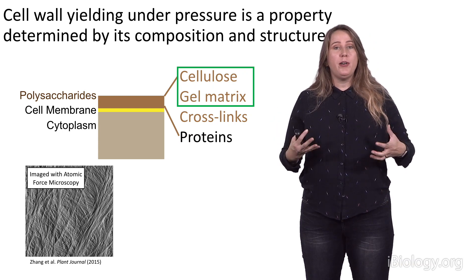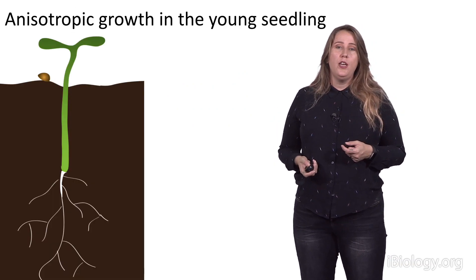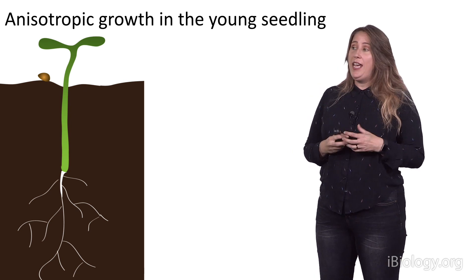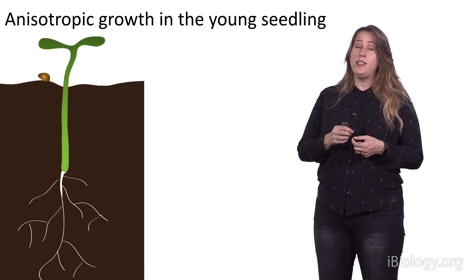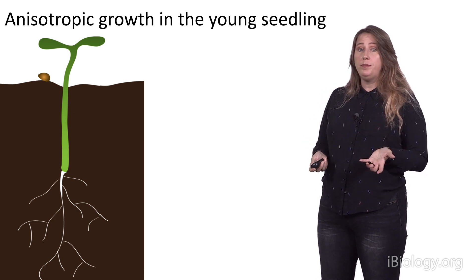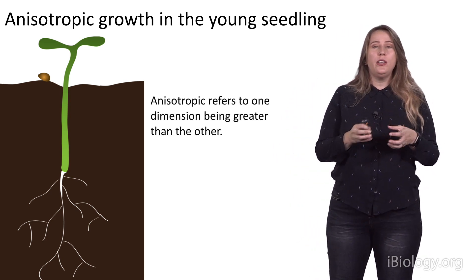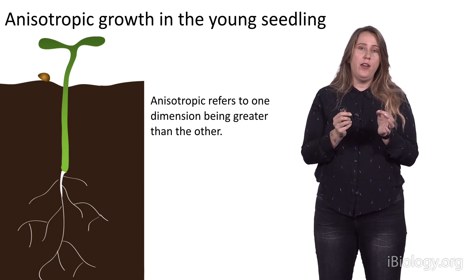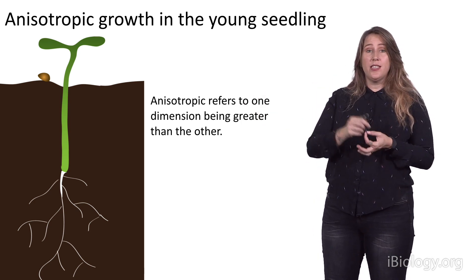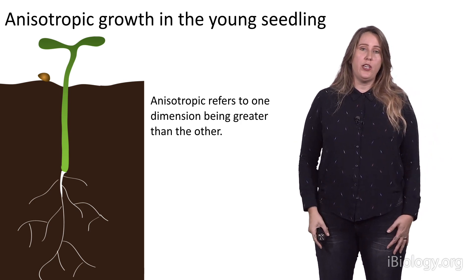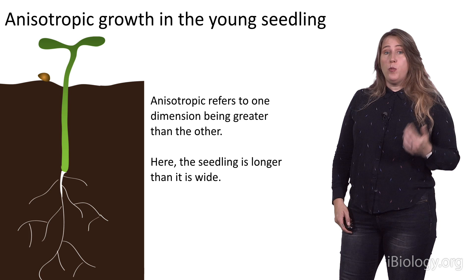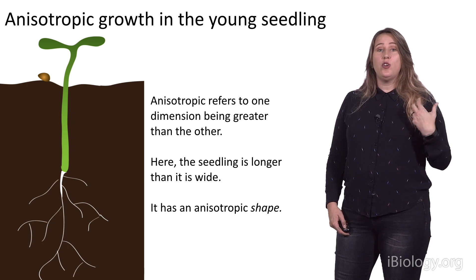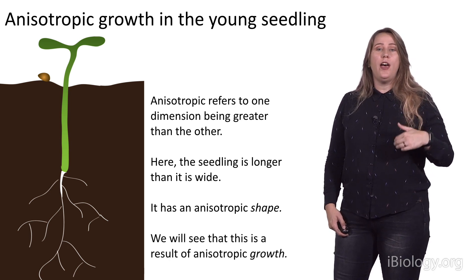Our study system is going to be the very young seedling of Arabidopsis thaliana. Anisotropic growth at the cell level is actually necessary for anisotropic growth at the seedling level. Anisotropy refers to one dimension being greater than another — you grow more in one direction than another, or even in a static shape where length is greater than width. The seedling is longer than it's wide, which must have been a result of more growth in length than width. It has an anisotropic shape that is a result of anisotropic growth.